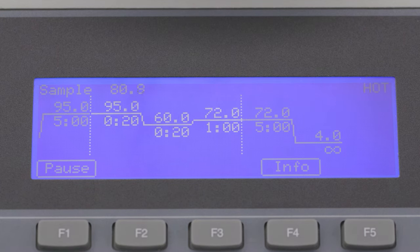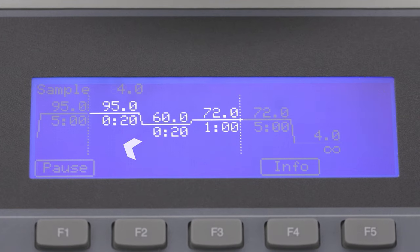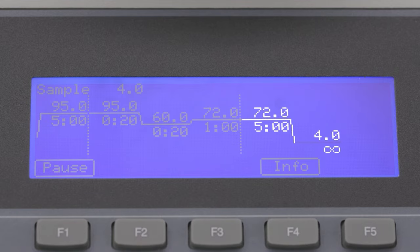These three steps comprise one PCR cycle. The cycle is repeated multiple times, allowing the generation of a large number of copies of a specific DNA fragment.